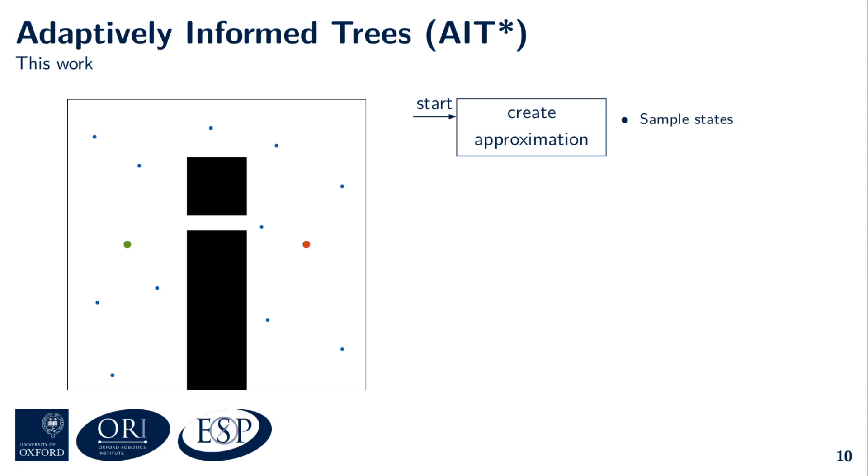AIT* views these states as a random geometric graph, as shown by the dotted edges, but it doesn't compute these edges until it needs them. The next step in AIT* is to compute an accurate cost-to-go heuristic that is admissible in the context of the current approximation. Let me provide some intuition on why this is beneficial.